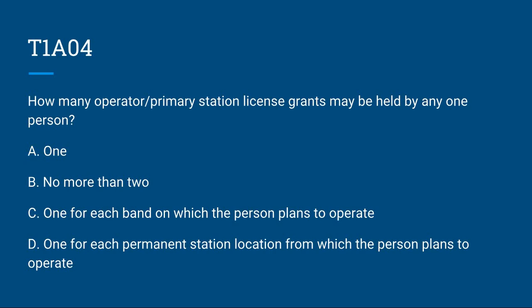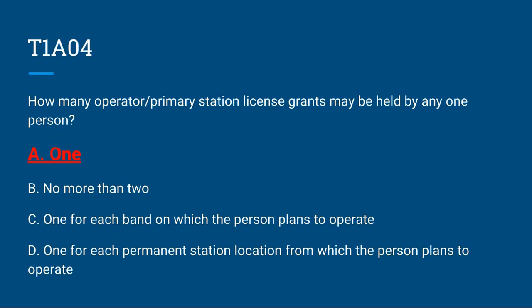T1A04: How many operator primary station license grants may be held by any one person? A, one; B, no more than two; C, one for each band on which the person plans to operate; or D, one for each permanent station location from which the person plans to operate. The correct answer is A, one.